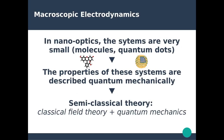Before we dive into electrodynamics, I should mention that in nano-optics, due to the small size of the systems we're interested in — such as molecules and quantum dots — the properties of these systems are usually described using quantum mechanics. So when looking at light-matter interaction, we're going to use semi-classical theory, which combines classical field theory via Maxwell's equations and quantum mechanics for those small objects.